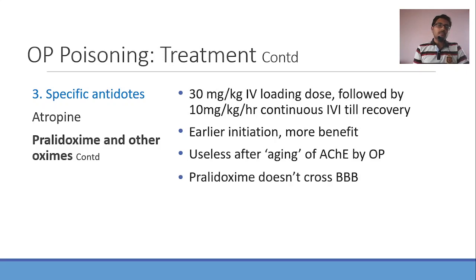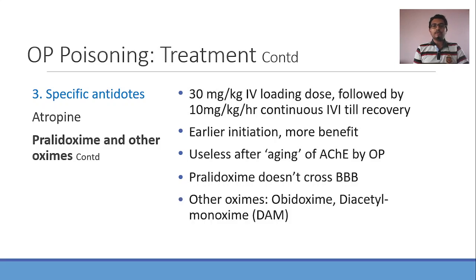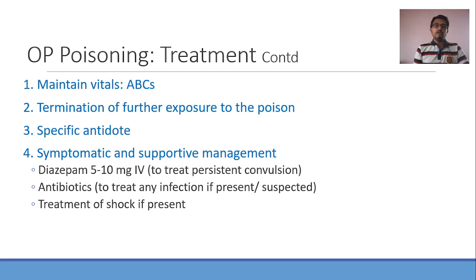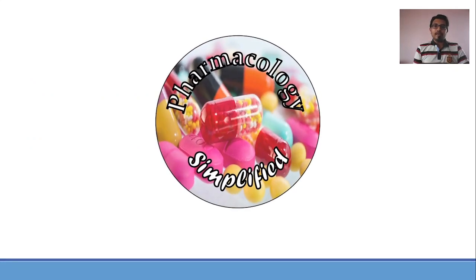Apart from pralidoxime — which does not cross the blood-brain barrier — there are two other oximes: obidoxime and diacetylmonoxime. Out of these, diacetylmonoxime crosses the blood-brain barrier. This is frequently asked in entrance exams — remember that diacetylmonoxime can cross the blood-brain barrier. The last point is symptomatic and supportive management, which depends on the patient and their manifestations. You can give diazepam for controlling seizures, antibiotics to treat any infection if present or suspected, and fluids or other interventions if the patient ends up in shock. I hope I have simplified this topic for you. Thank you. Namaste. Have a nice day.